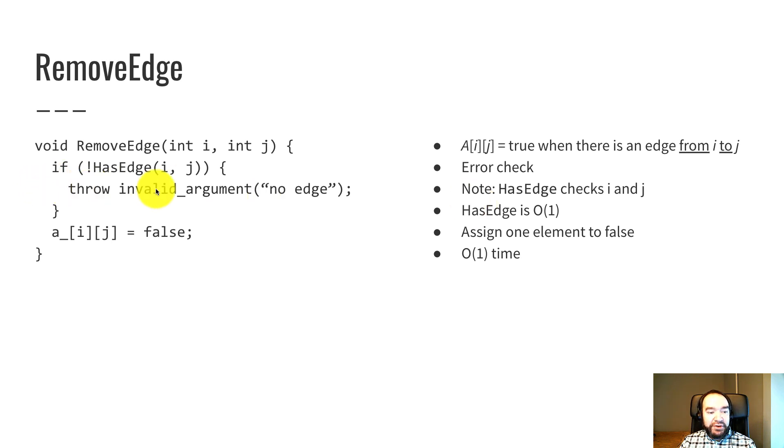Removing an edge is also pretty simple. We're supposed to throw an exception if there's no edge there. So I just say if there is not has edge from i to j, throw an exception. So we're reusing has edge from before. Has edge takes constant time. Note, by the way, I don't need to check i and j because has edge already is doing that for me.